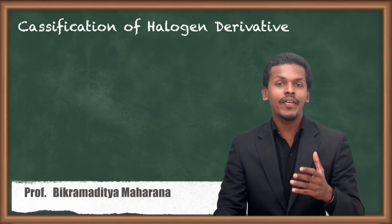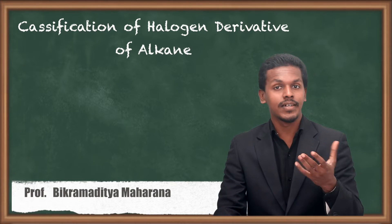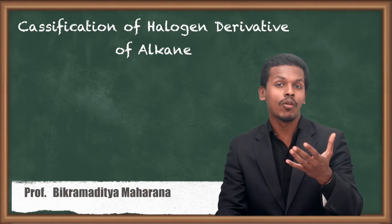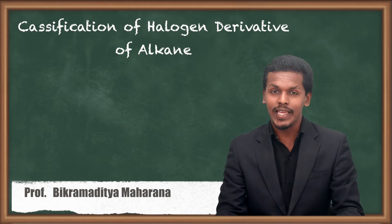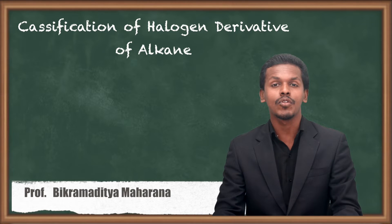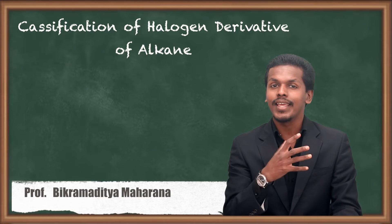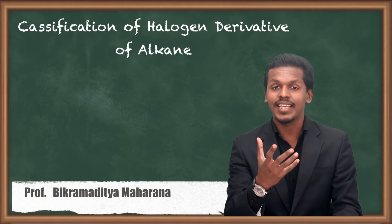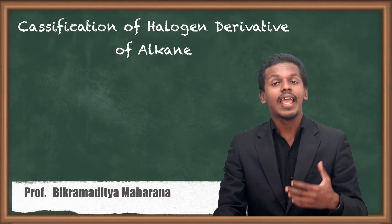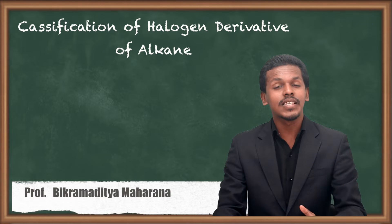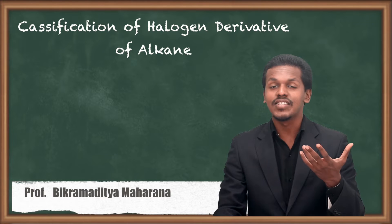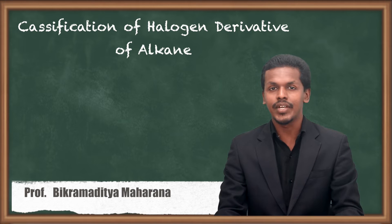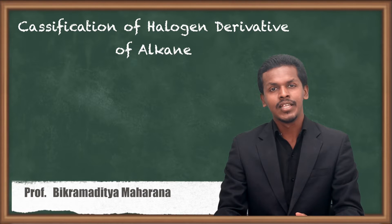Hello friends. In the last lecture we got to know about what is a halogen derivative of alkane, which we could also call haloalkanes. We also got a few glimpses about how they can be prepared, and we discussed the general formula for the monohalogen derivative of alkane.